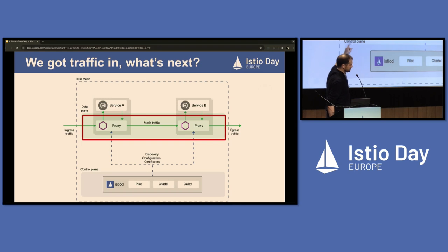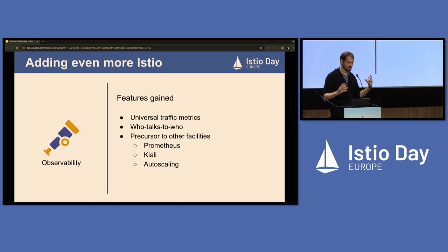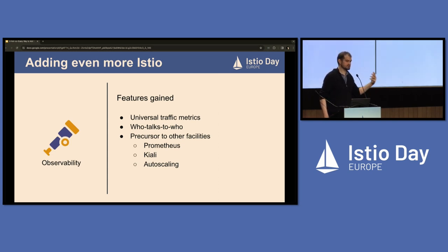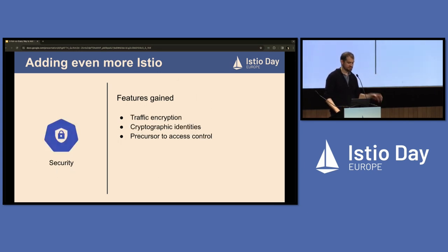If we want anything else — traffic between pods or anything beyond ingress — we're going to need more. Looking at the grid again: ingress gateway, check. Traffic management, a tiny bit. But we want more, so let's add observability, because that's another very important feature. It will give you insight into pretty much everything — provided there's protocol support in Istio. If you're using a custom binary protocol it probably won't understand it, but for standard web traffic you'll see everything. Observability is also required if you want to use other systems like Kiali for visual service mapping, or Prometheus for metrics.